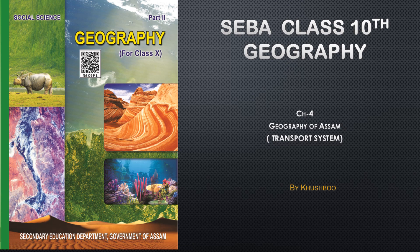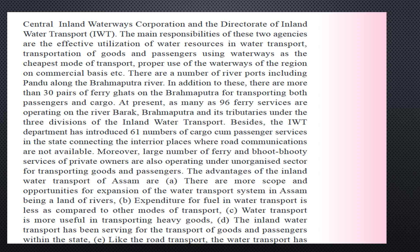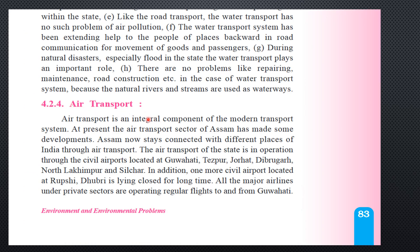Hello and welcome to History Classes. This is the Class 10th Geography Textbook and we are doing Chapter 4, which is Geography of Assam. We are discussing the topic of Transportation System in Assam. Rail Transportation, Road Transportation, and Water Transportation have already been uploaded — you can check those from the playlist. Today's topic is Air Transport.